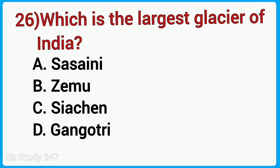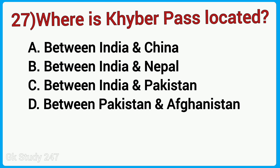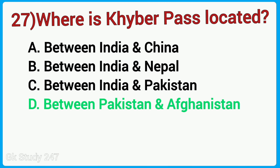Which is the largest glacier of India? Answer is Siachen. Where is Khyber Pass located? Answer is between Pakistan and Afghanistan.